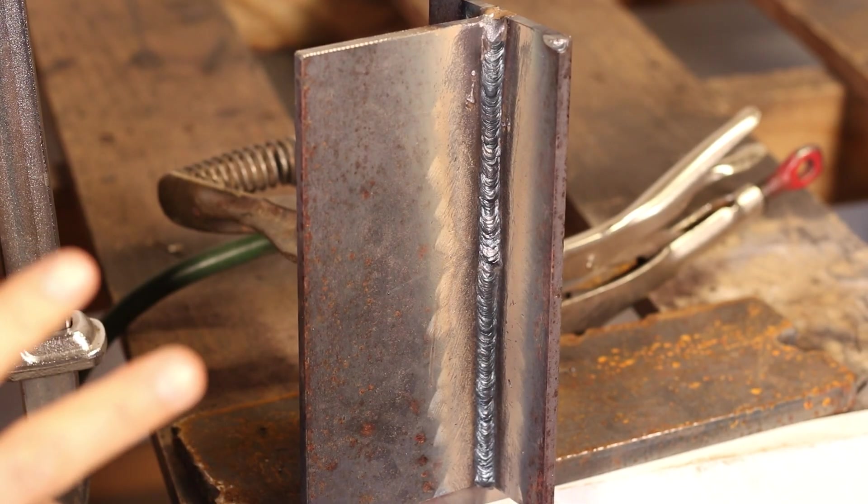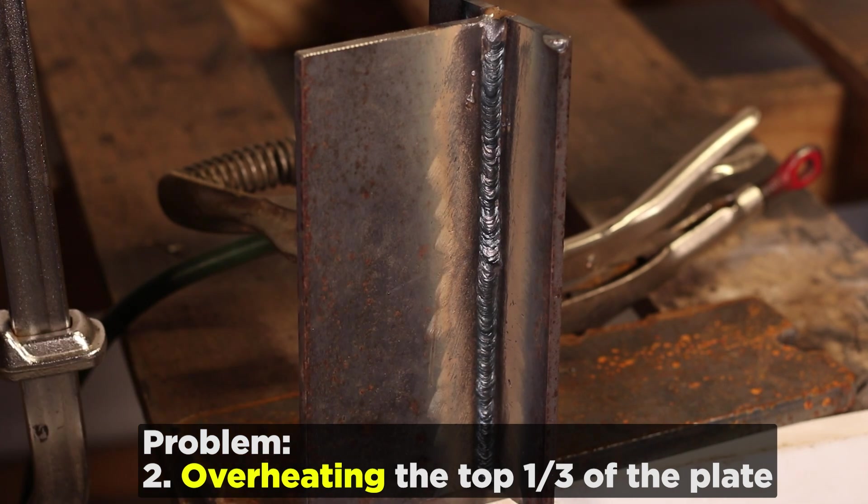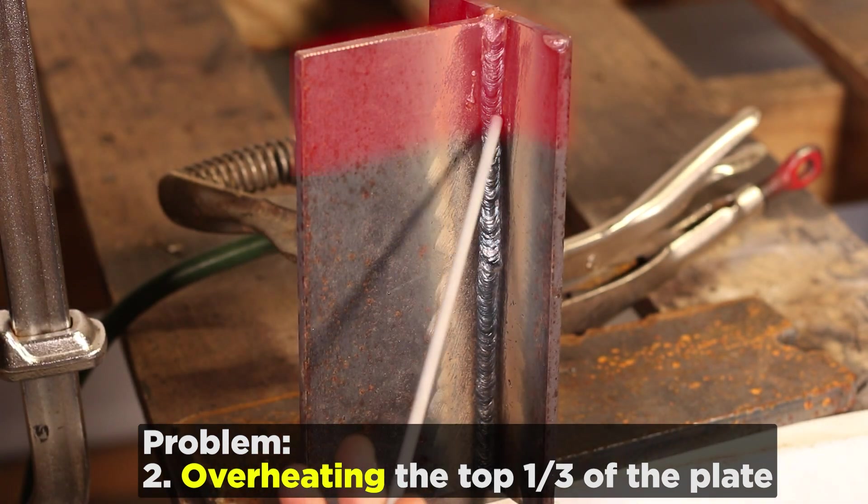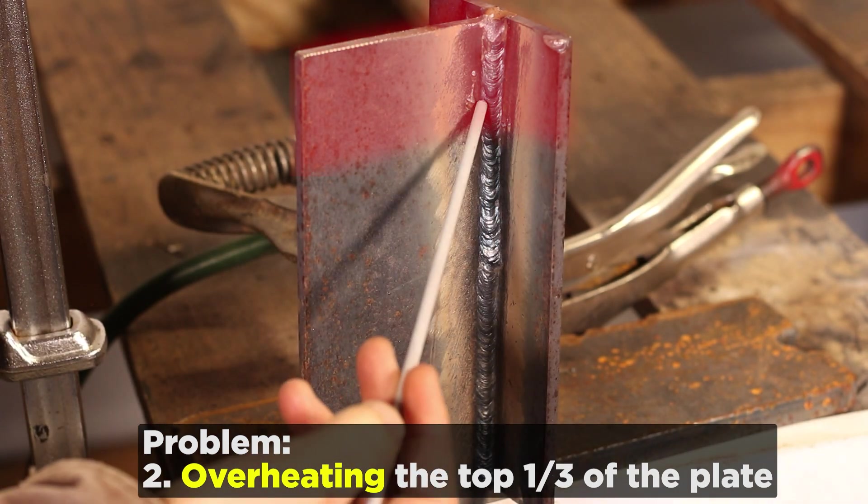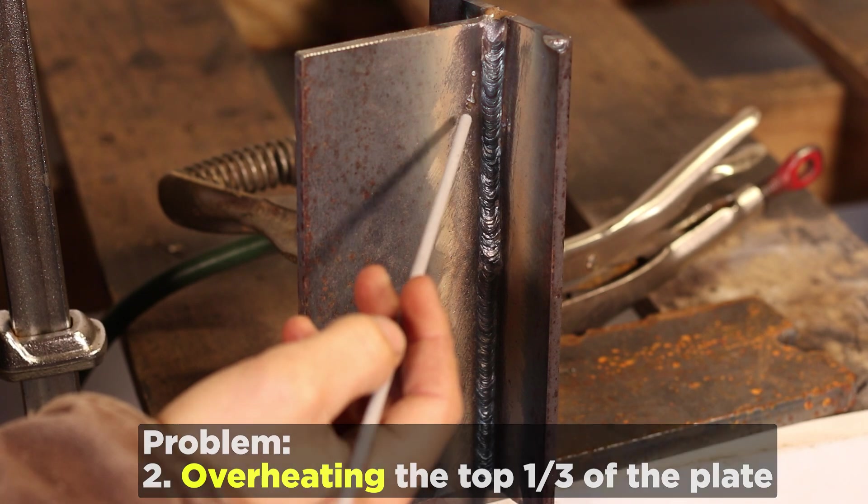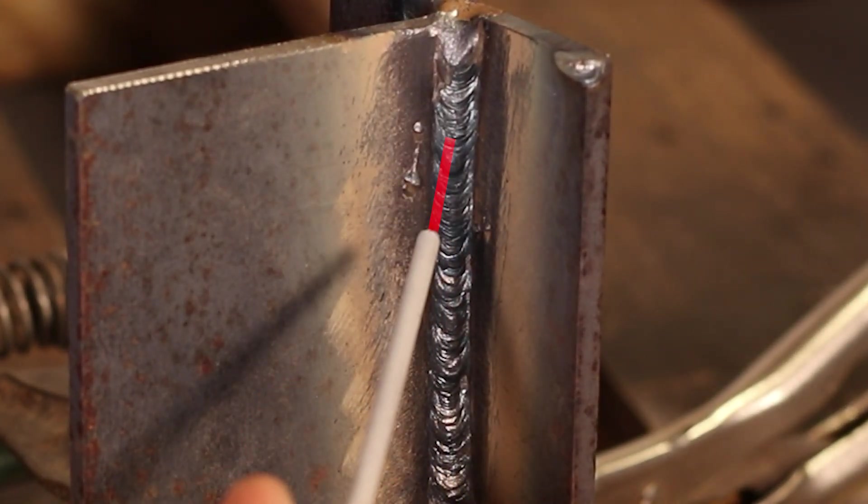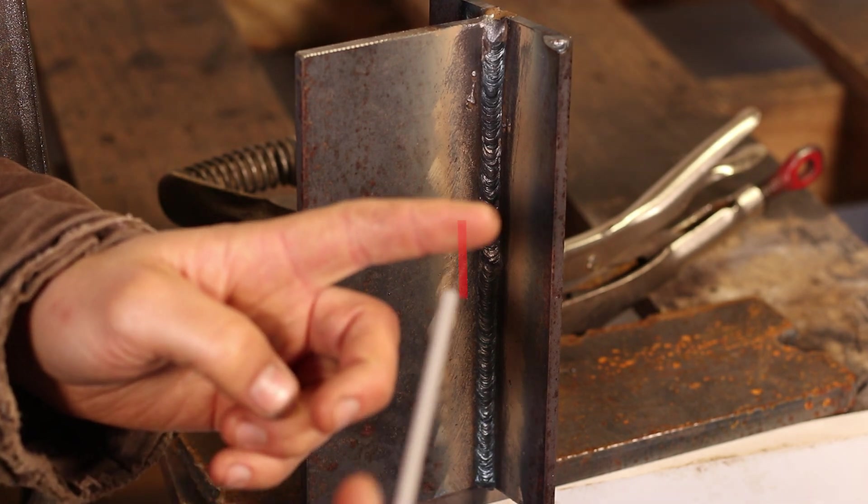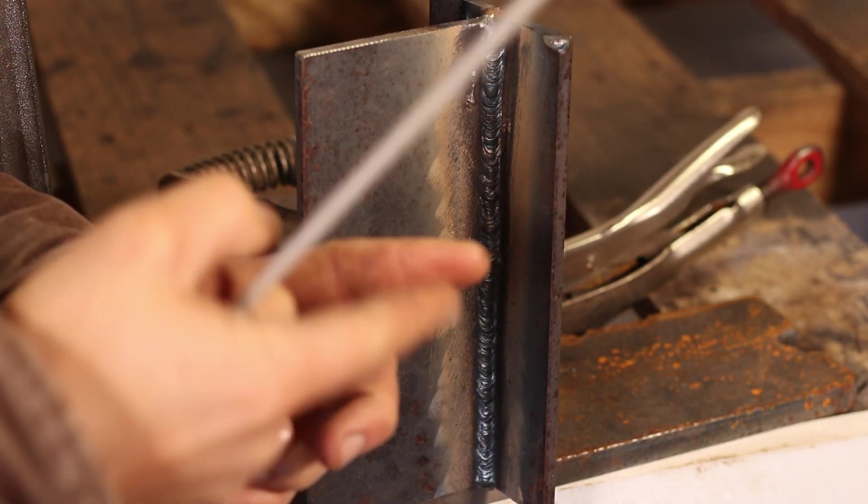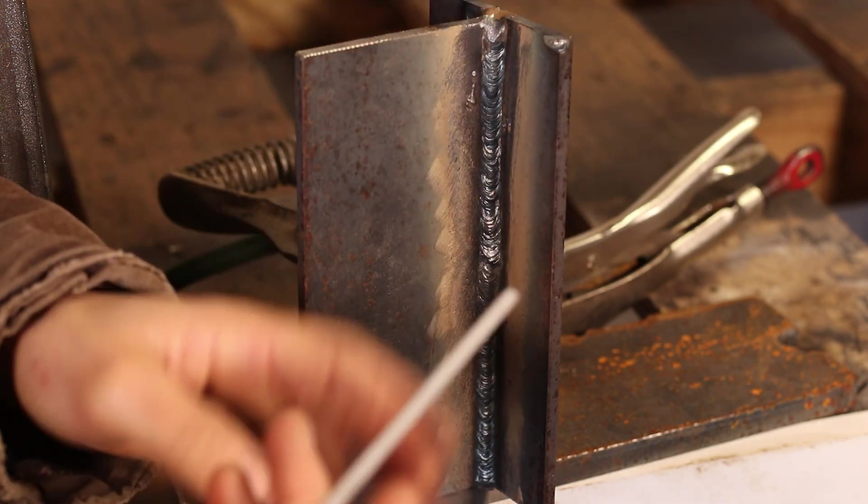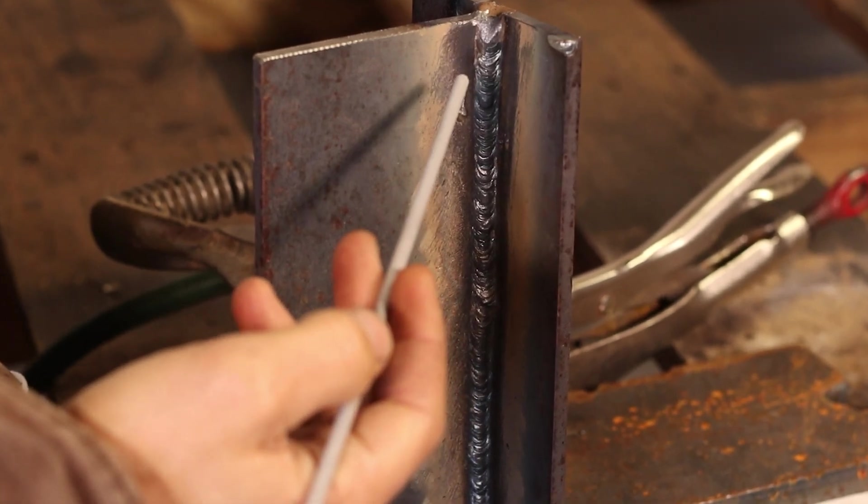All right, so this brings us to our second problem. So as I was going up, when I got to about right here or so, it started to get really hot. All right, so what people want to do is it starts getting hot, starts getting hard to control, and people kind of panic and they pull their rod out. And when you pull your rod away from the metal, the electrical resistance increases right there, the amperage spikes. And then it makes the problem even worse.